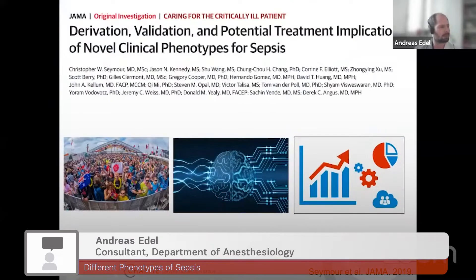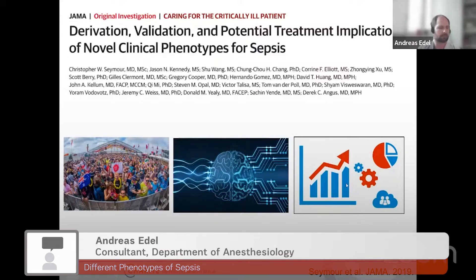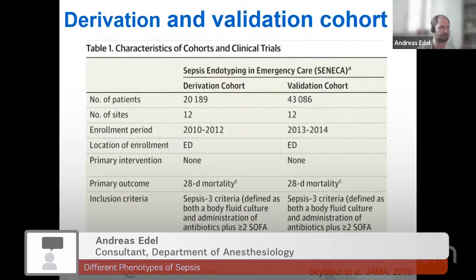I found this really interesting paper from our colleagues from Pittsburgh, from Simer, which wanted to analyze a big cohort with a machine learning algorithm and look at which results they could find. First of all, I want to show you the huge cohort they had — a retrospective cohort with a derivation and validation set, where they tried to analyze septic patients and find the best clusters of phenotypes of sepsis.